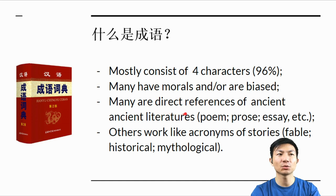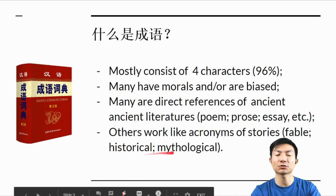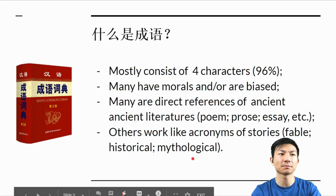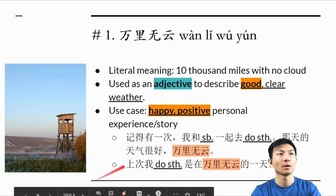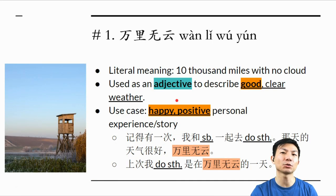Many 成语 are direct references from Asian literatures like poems, prose, essays, etc. Other 成语 are like acronyms of stories like Chinese fable stories, historical stories, or mythological stories. We are going to take a look at some specific 成语 and how to use them in a Chinese cultural presentation.